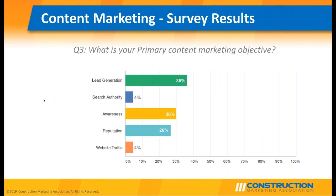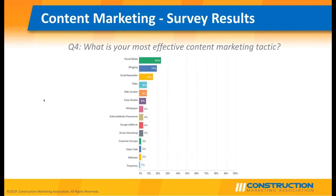When asked about primary objectives for content marketing, the largest was lead generation at 35%, followed by awareness and reputation, then search authority and website traffic. For the most effective content marketing tactic, social media ranked tops at 21%, followed by blogging at 17%, email and newsletters at 13%, and then video, web content, case studies, white papers, and editorial media placements.